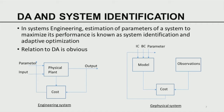Data simulation also has a lot in common with systems identification as used in systems engineering. In systems engineering, estimation of parameters of a system to maximize performance is known as system identification or adaptive identification. Consider an engineering system — a physical plant, which may be a chemical plant, an aircraft, or a ship. It has inputs and parameters, which are knobs meant to change the behavior of the system. For example, if this were a chemical plant, the input could be raw materials and the parameters could be the presence of a catalyst, temperature, pressure, or concentration.